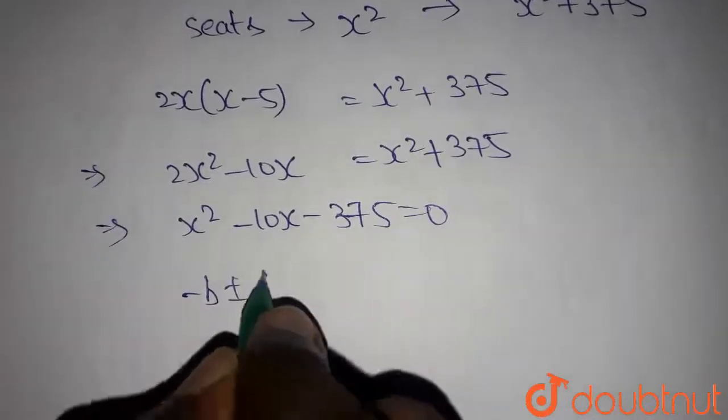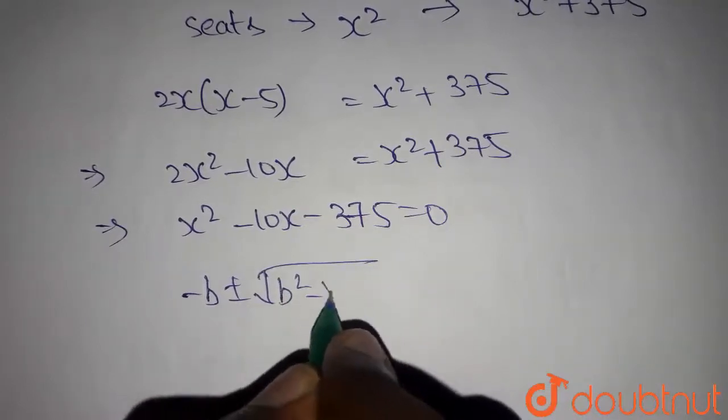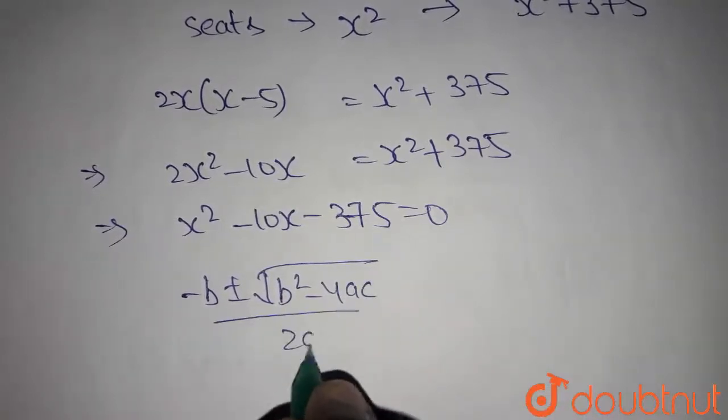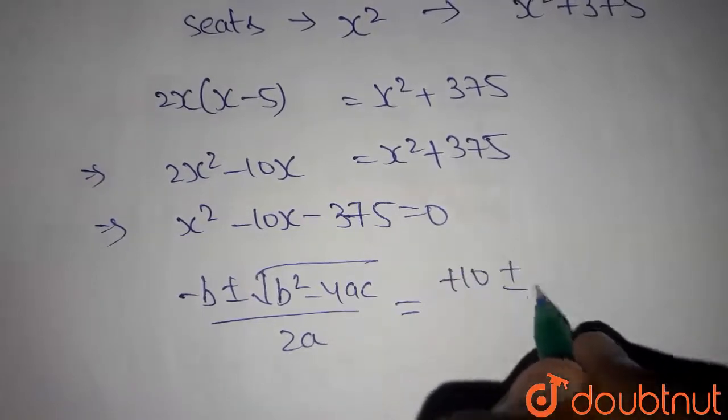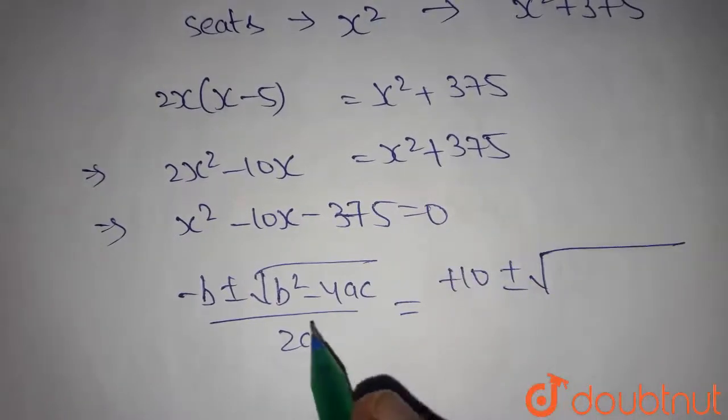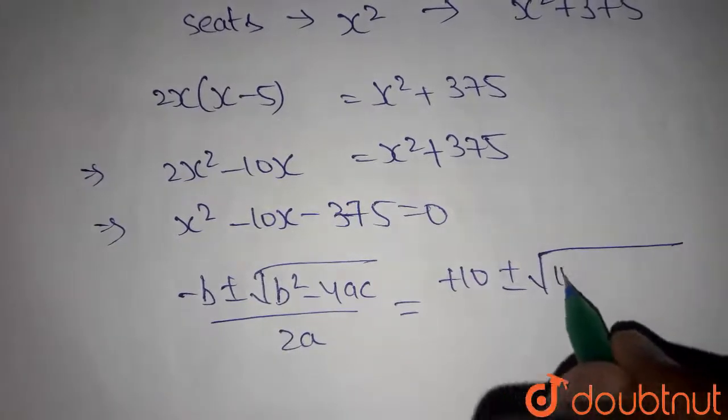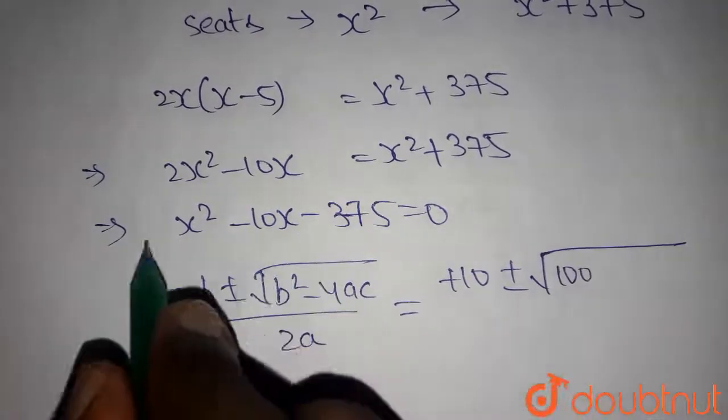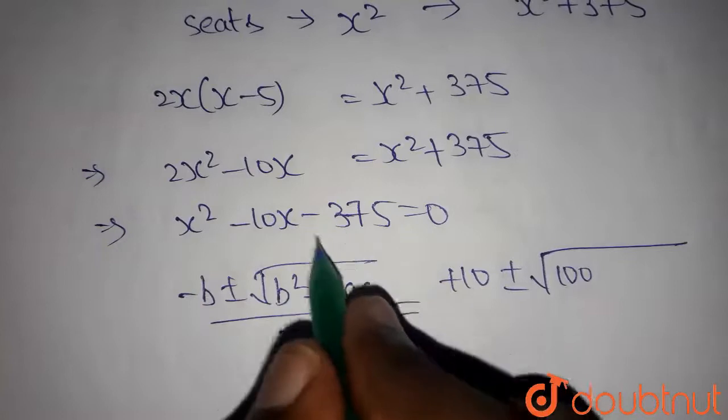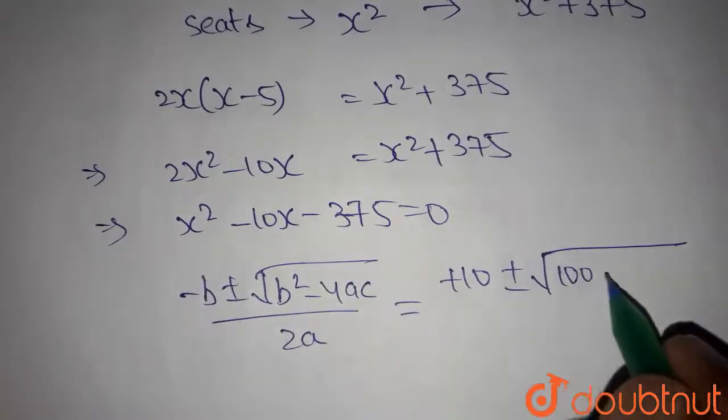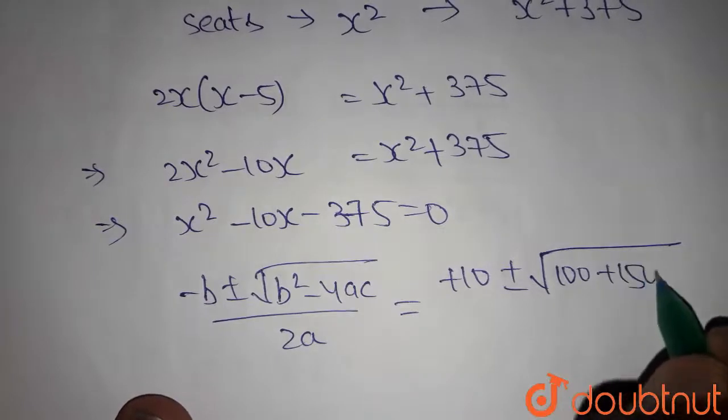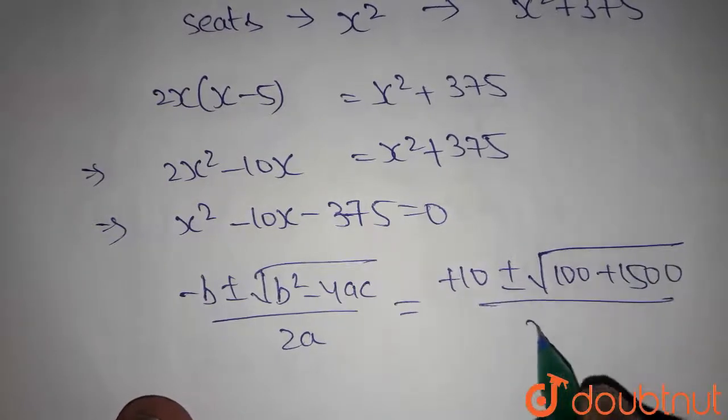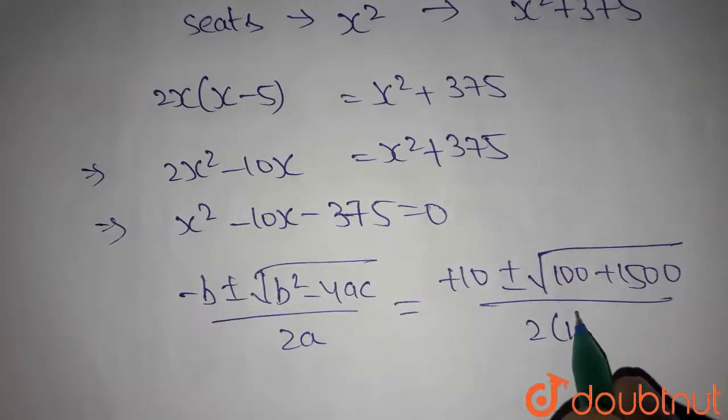We can get the roots by minus b plus or minus root over b squared minus 4ac divided by 2a. So minus will become plus 10 plus or minus root over b squared is 10 squared which is 100 minus 4 into 1 into c minus 375. So minus 4 into minus 375 becomes 1500 plus 1500 divided by 2.